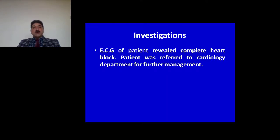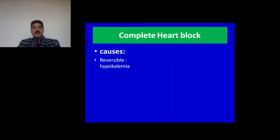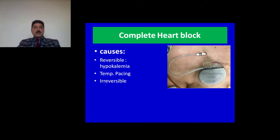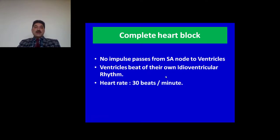Patient was referred to the cardiology department for further management. What are the causes of complete heart block? There can be reversible causes like hypokalemia, where the patient is put on temporary pacing and after the hypokalemia is reversed the patient is discharged. If the cause is irreversible, the patient needs permanent pacing. The decision taken by the cardiologist in this case is to go for permanent pacing.